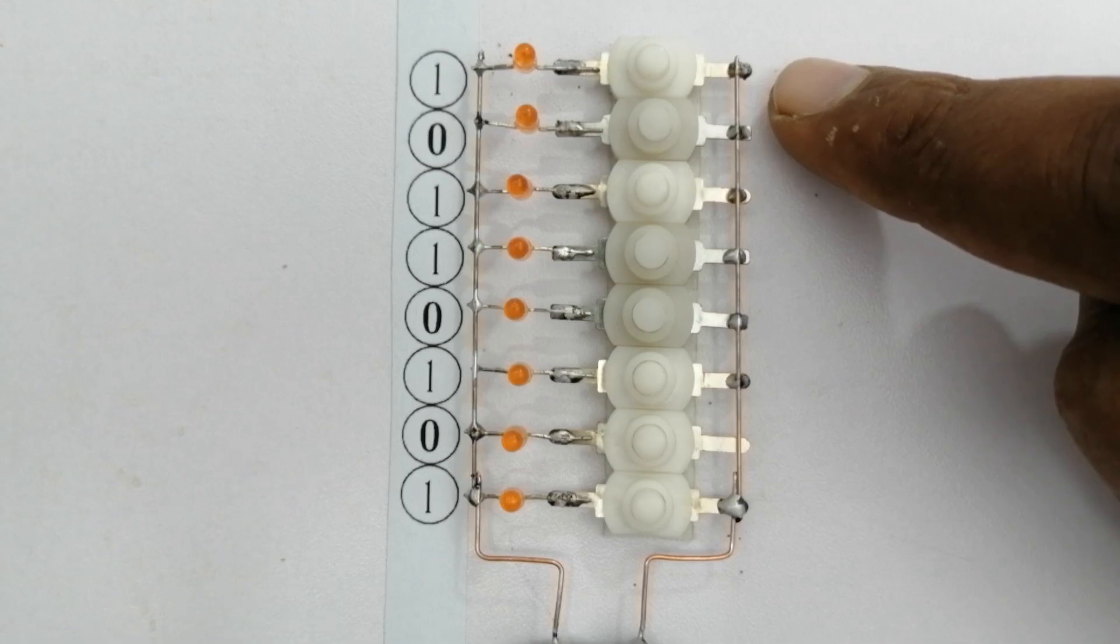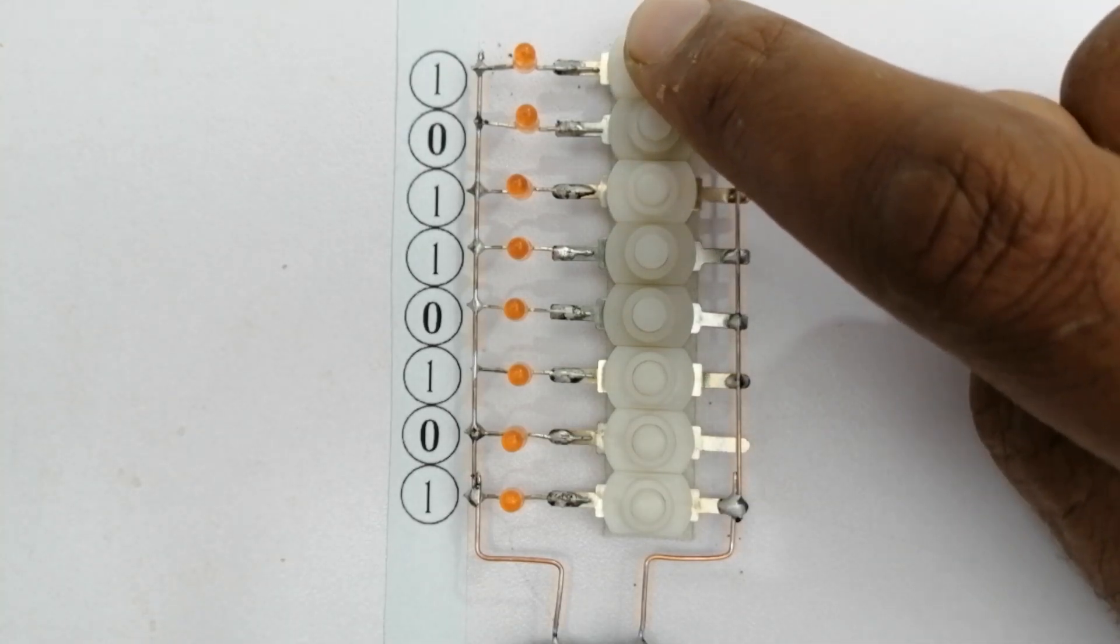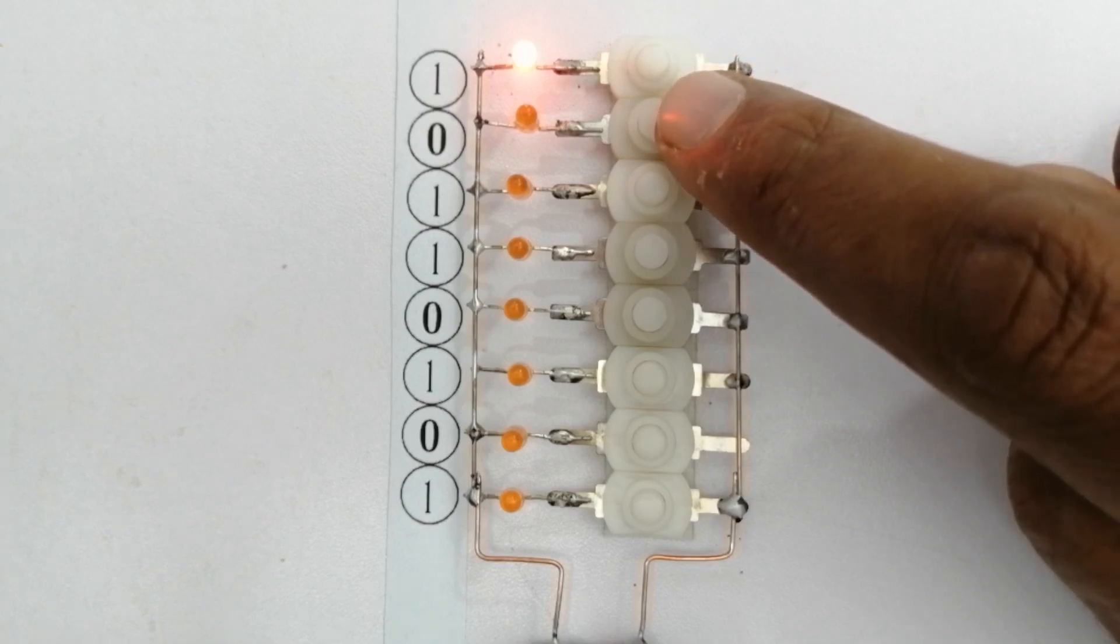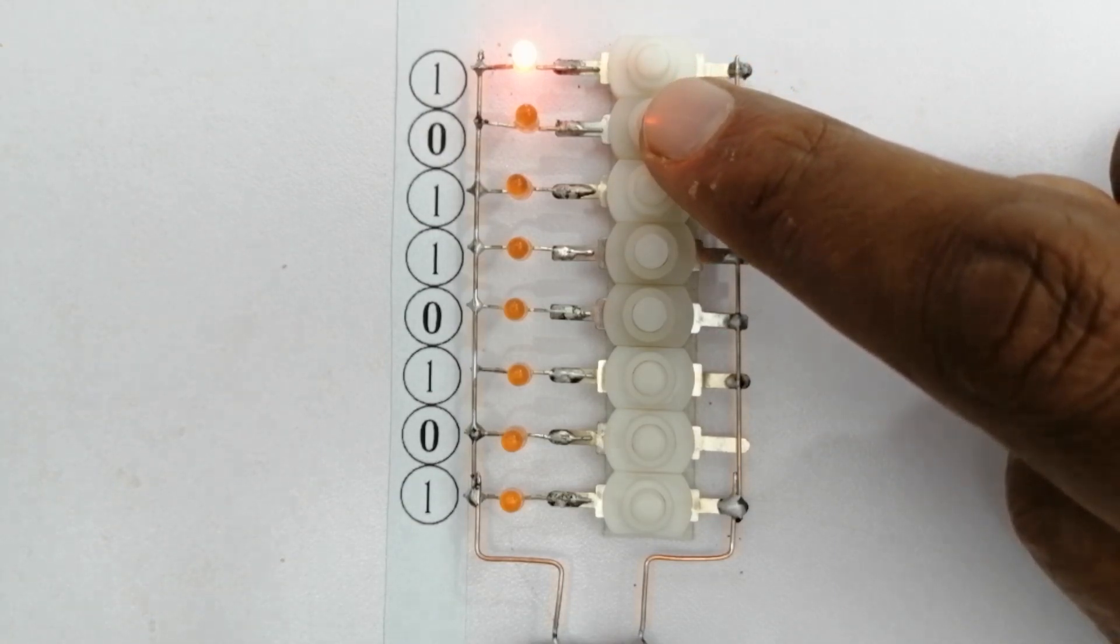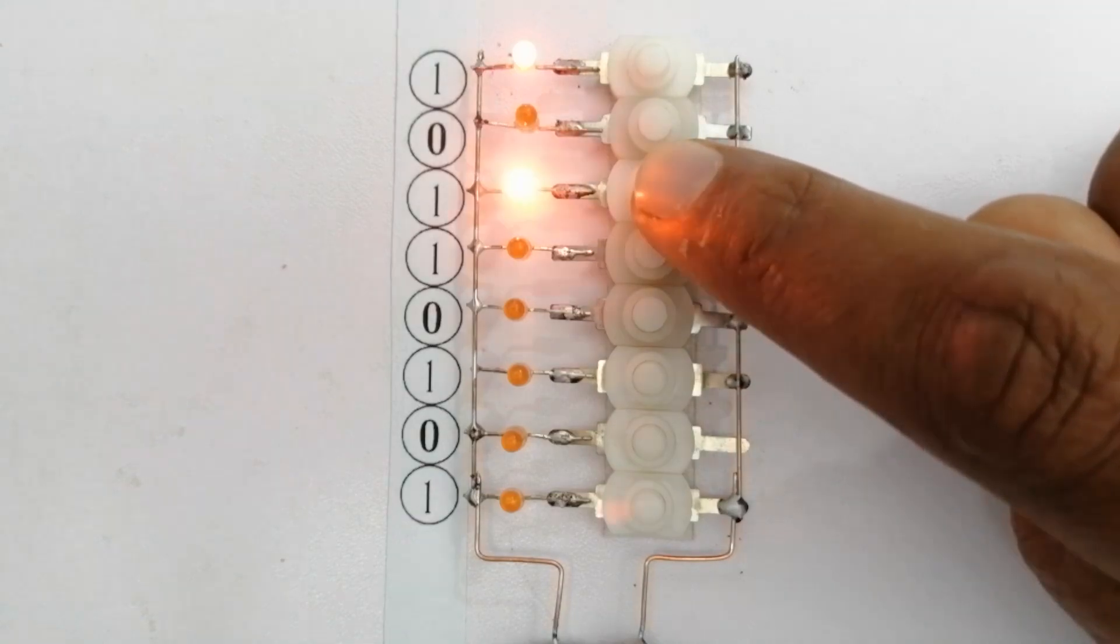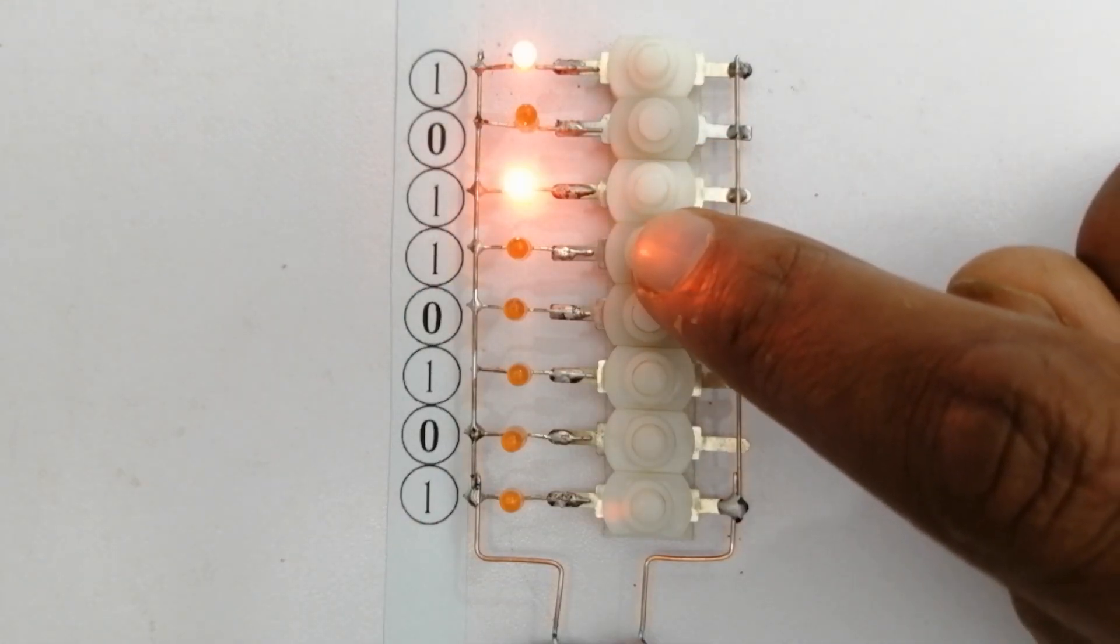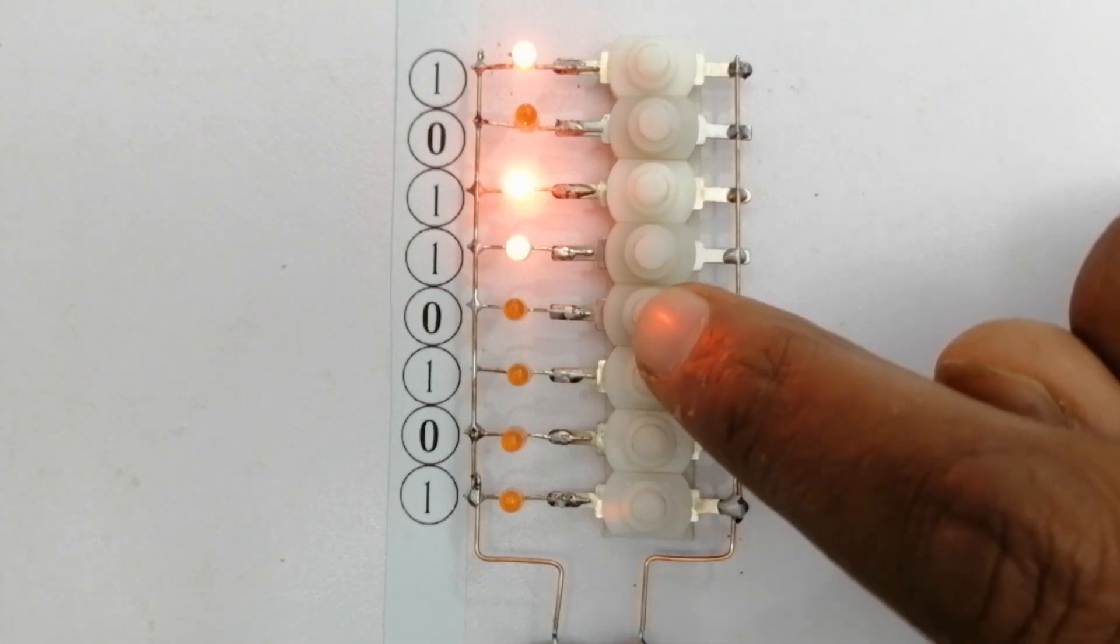The first value is 1 so we will turn on the switch. It is 0 after that, we will turn off the switch. There is 1 after that, we will turn on the switch. After that 1 so we will turn on the switch.